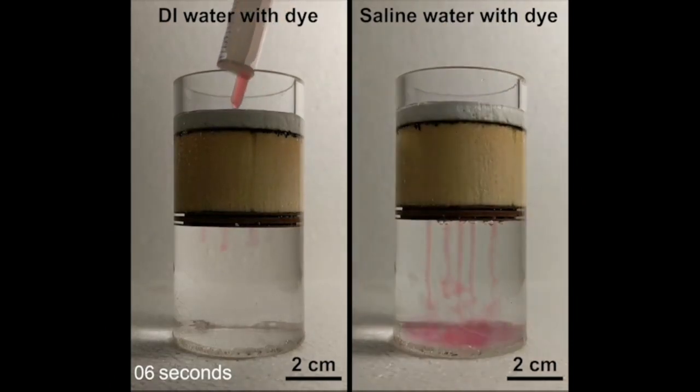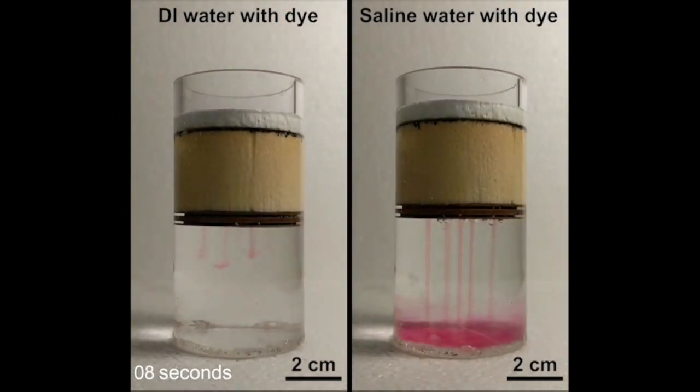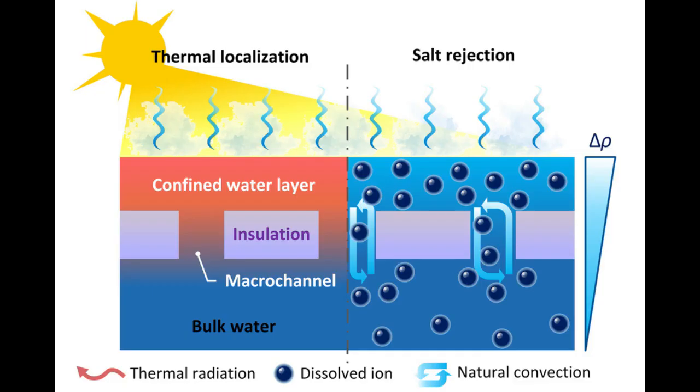Just as hot air rises and cold air falls, natural convection drives the desalination process in this device. In the confined water layer near the top, the evaporation happens at the very top interface. Because of the salt, the density of water at the very top interface is higher and the bottom water has lower density. So this is an original driving force for this natural convection because the higher density at the top drives the salty liquid to go down. The water evaporated from the top of the system can then be collected on a condensing surface, providing pure, fresh water.